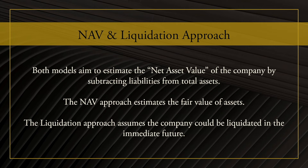The next two models are the NAV approach and the liquidation approach. Both aim to estimate the net asset value of the company by subtracting liabilities from total assets. However, there is a difference: the NAV approach estimates the fair value of all assets in the company, while the liquidation approach assumes the company could be liquidated immediately — meaning intangible assets are excluded and only net realizable value is computed.